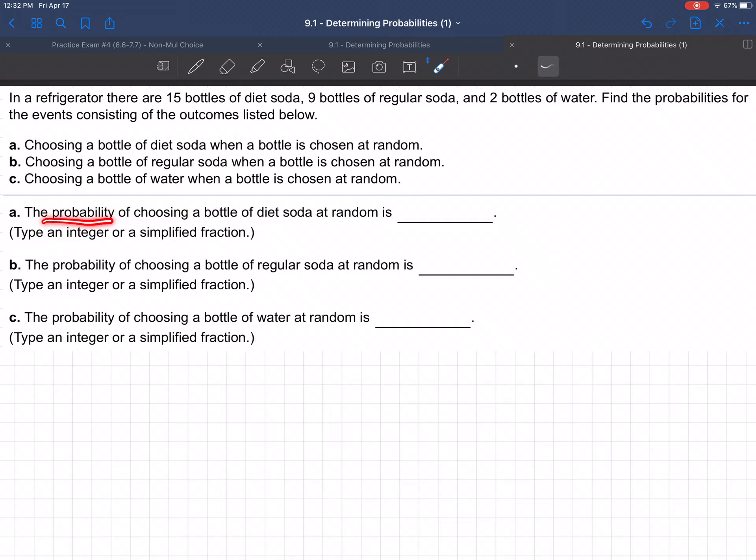So what's the probability of choosing a bottle of diet soda at random? If you're just grabbing the bottles at random, what's the chance you're going to get diet? So the probability of diet is, well, there's 15 diet, so that's going to be 15 over, what's the total here? We've got to get the total, don't we? 15 plus 9 plus 2, what's that?